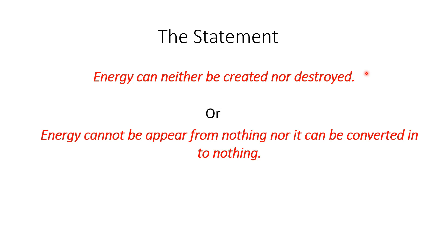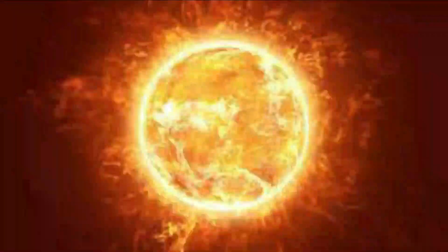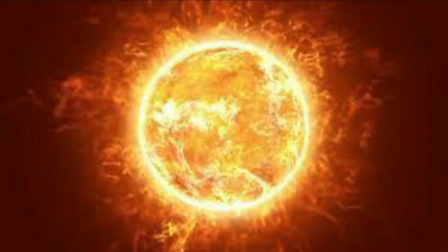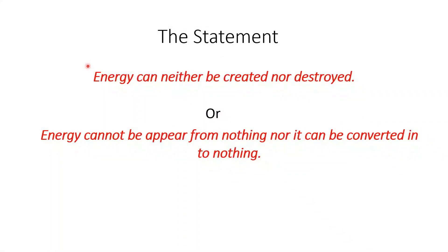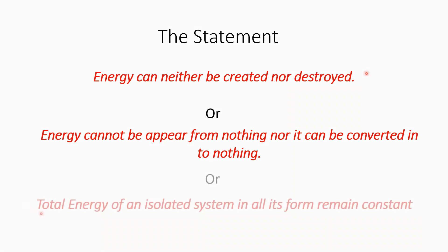The difference between these two statements is important. The first statement says energy can neither be created nor destroyed, but one can ask: how is energy being created in the sun on a day-to-day basis? The second statement answers this in a more universal way — energy cannot appear from nothing, meaning there is always something from which energy is being created. The third statement is: the total energy of an isolated system in all its forms remains constant.